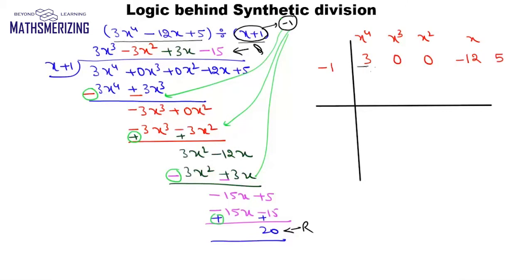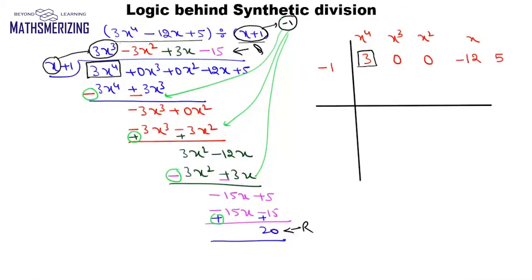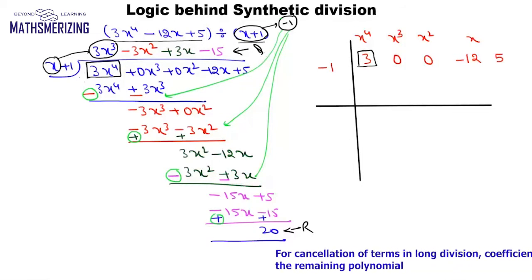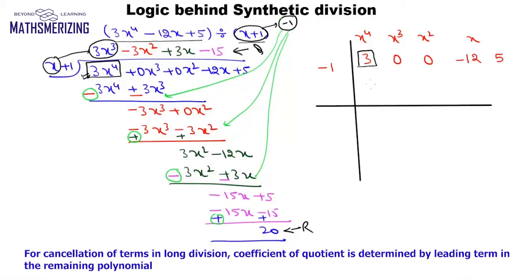The leading coefficient of the polynomial is 3, which is 3x⁴, and we need to eliminate this 3x⁴. To eliminate it, we need to multiply x with 3x³ — the first coefficient of the polynomial. That is why we always put 0 there first, and then 0 plus 3 is 3.